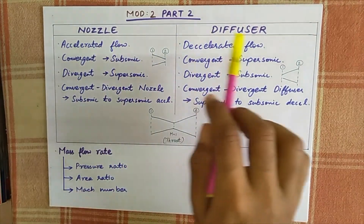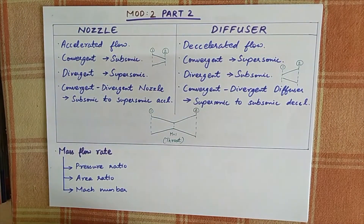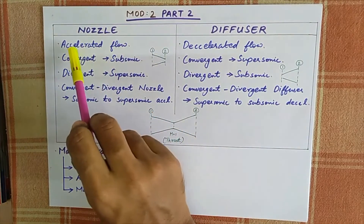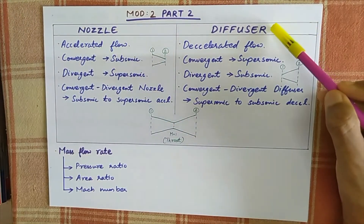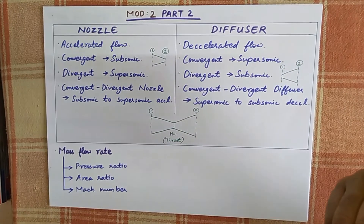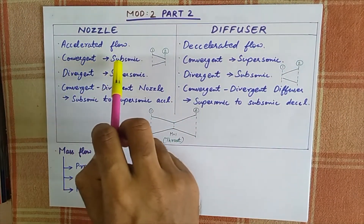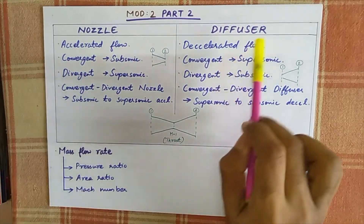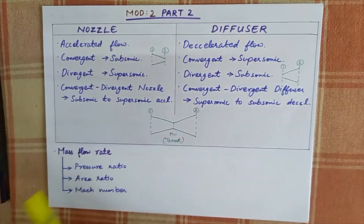Nozzles and diffusers — nozzles are accelerated flow that we use, and diffusers are decelerated flow that we use. The convergent part is subsonic, and nozzles and diffusers are the convergent part of the supersonic.